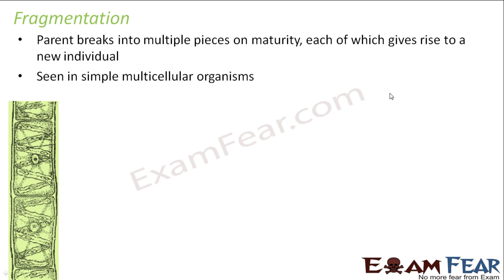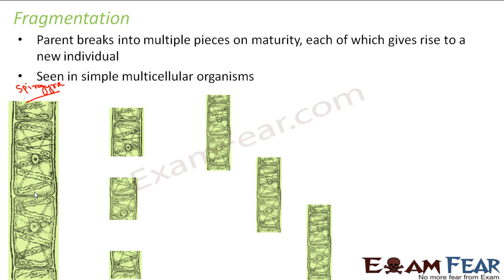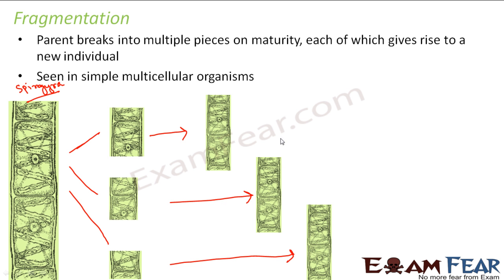The example we have here is of spirogyra. This is how spirogyra looks. When it becomes mature, it divides itself into different parts, and each of these parts then becomes a new spirogyra altogether. It divided itself into three parts and each of these parts regenerated to form the entire organism. So from one spirogyra, we got three new spirogyra. This is known as fragmentation because the organism breaks itself into many fragments which give rise to new individuals.